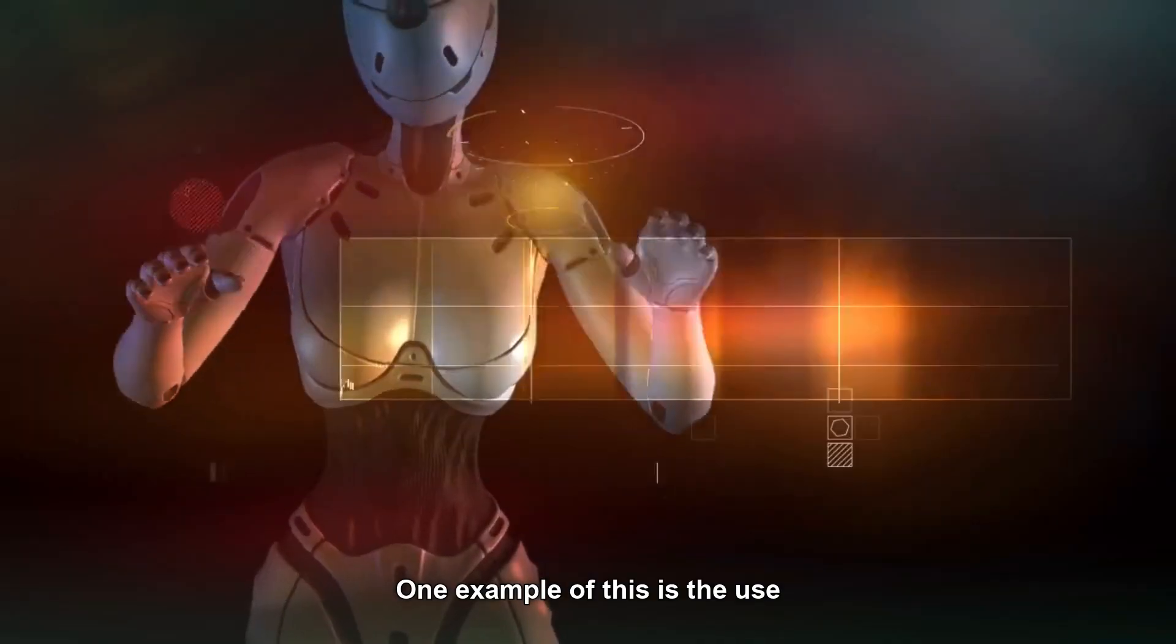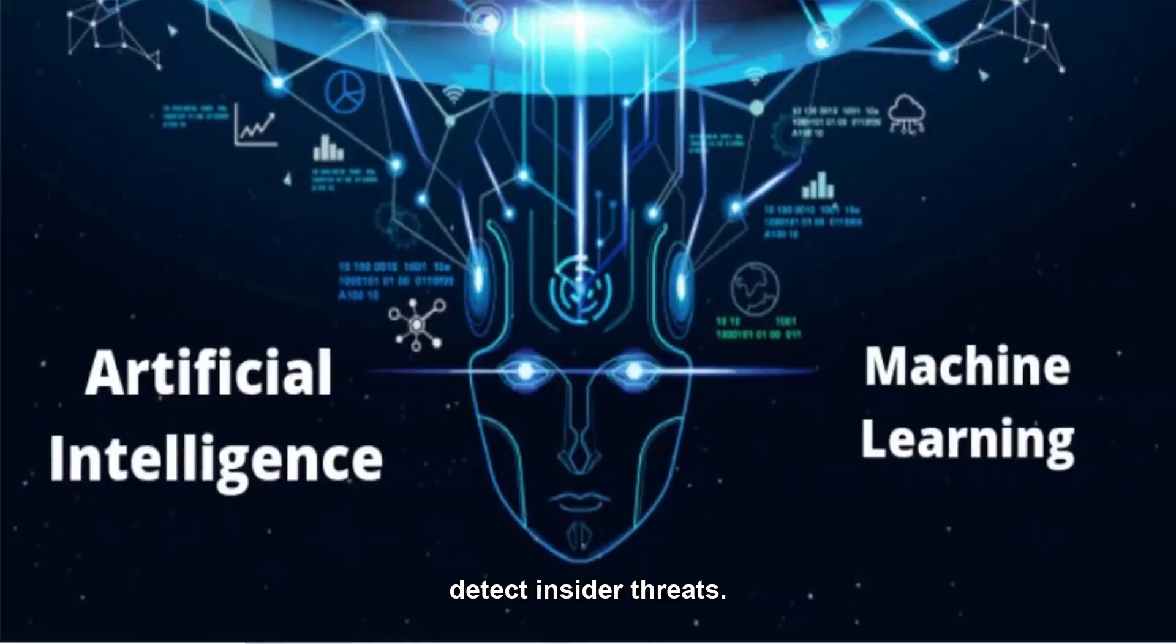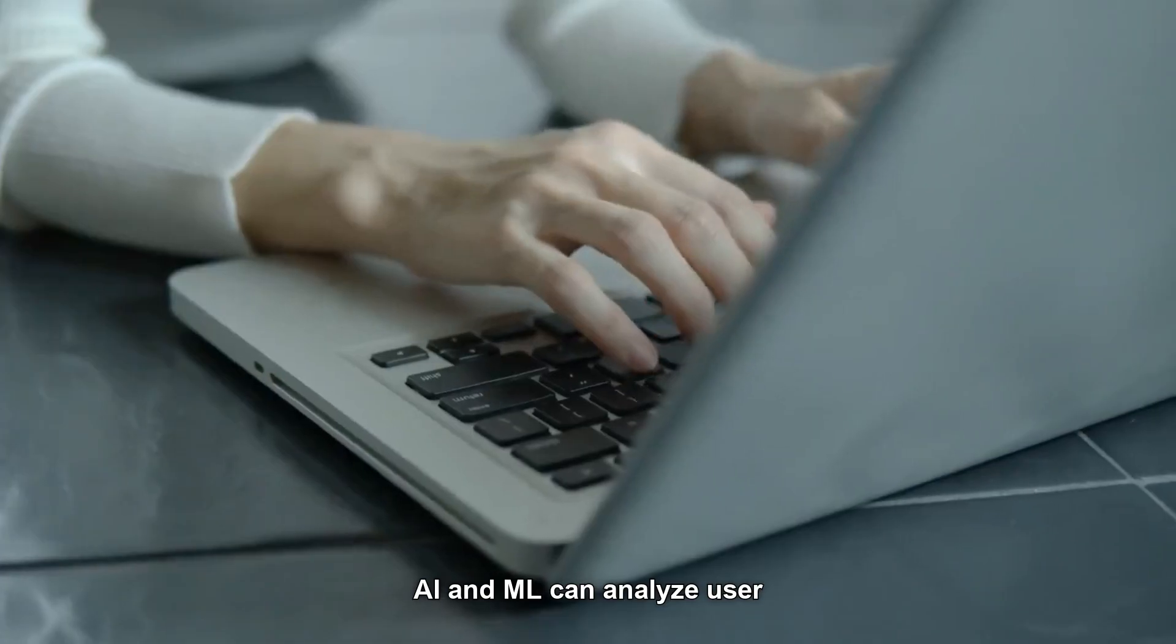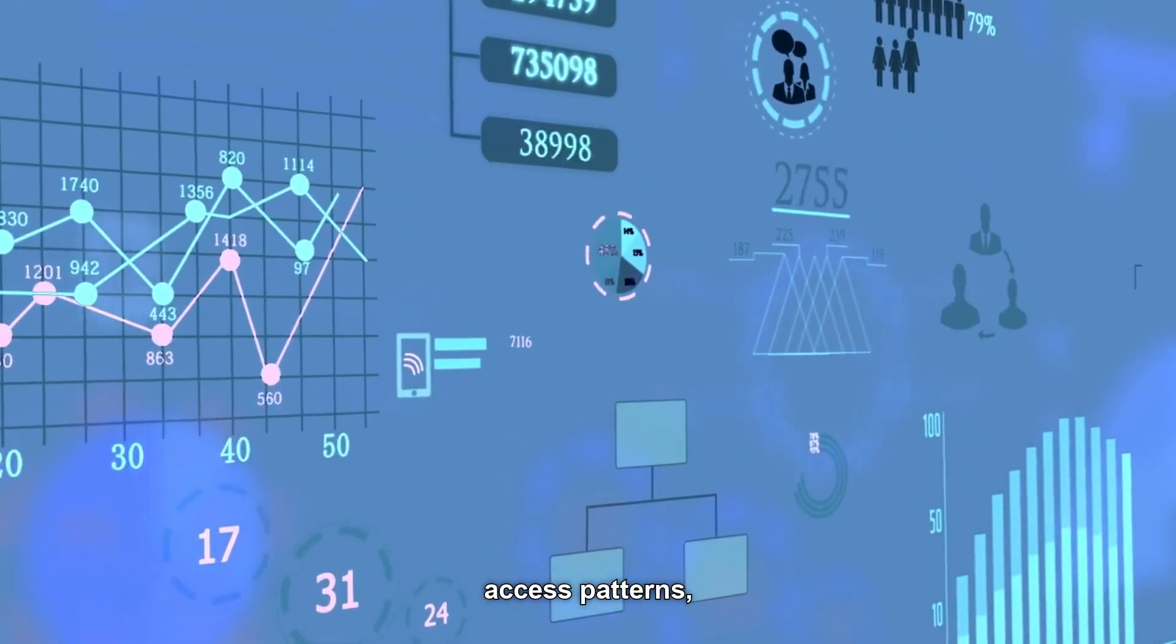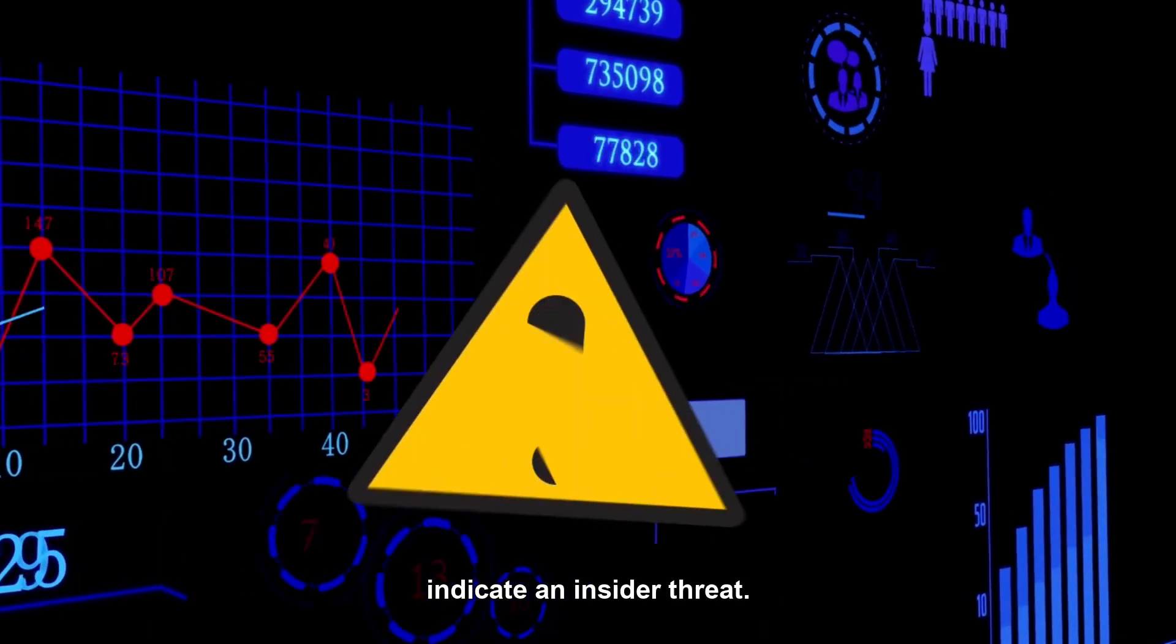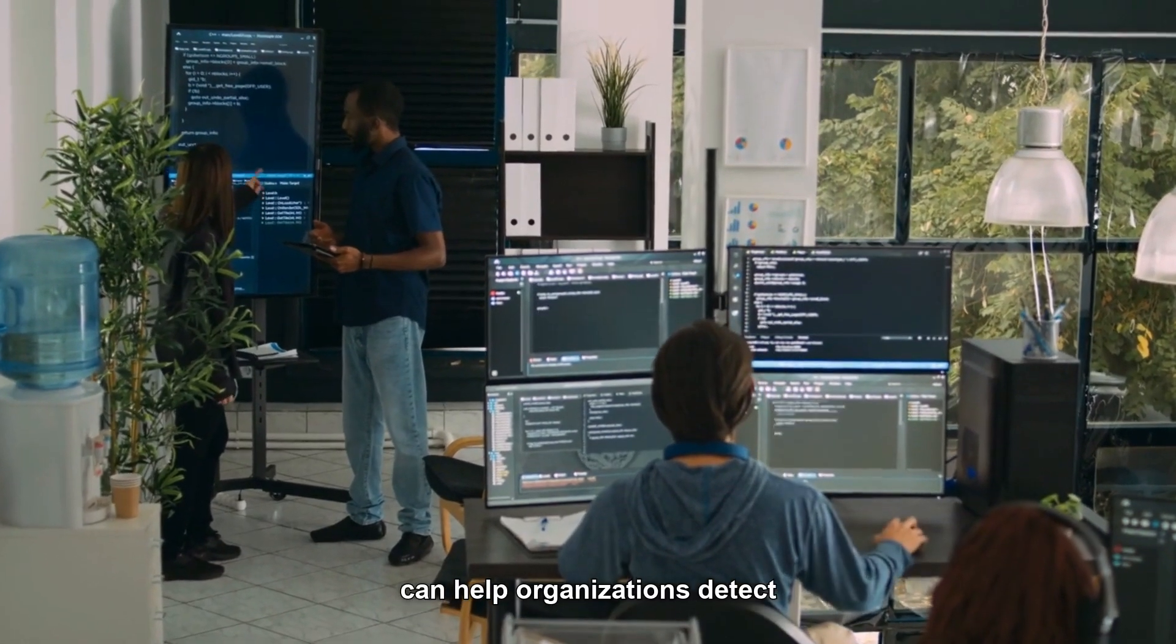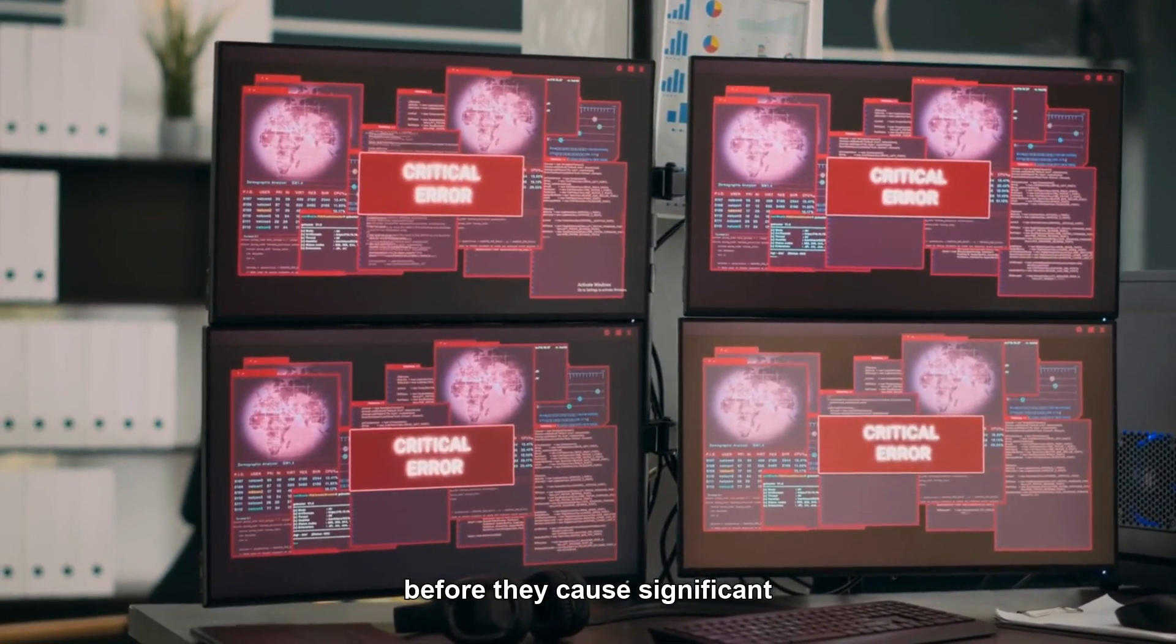One example of this is the use of behavioral analytics to detect insider threats. AI and ML can analyze user behavior such as login times, access patterns, and data usage to identify anomalous activity that may indicate an insider threat. This can help organizations detect and respond to potential threats before they cause significant damage.